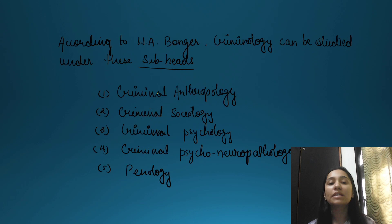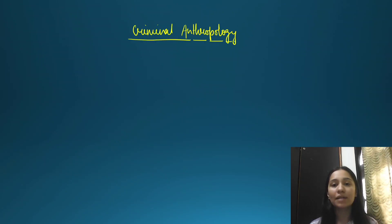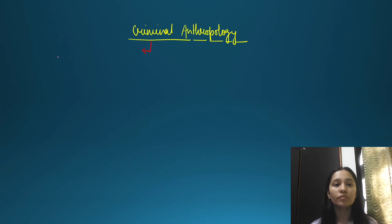What is criminal anthropology? The first word is 'criminal' — a person who acts against the law, a lawbreaker. The second word is 'anthropology,' the study of humans. So criminal anthropology explores how the study of humans helps us understand criminal behavior.